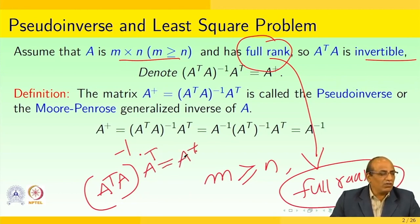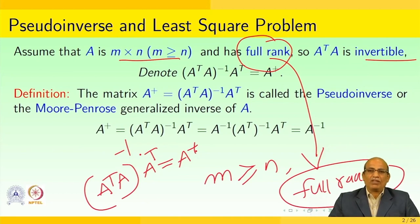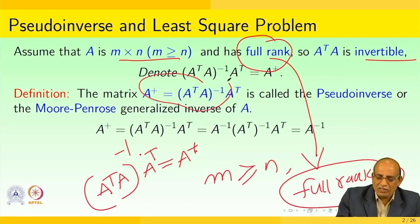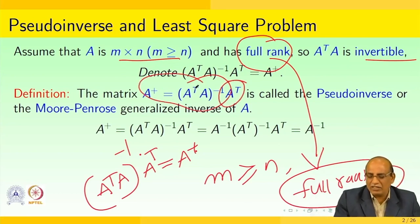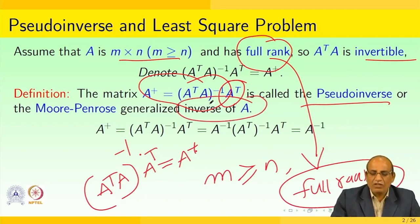We call A plus the pseudo inverse. So A plus is equal to A transpose A whole inverse multiplied with A transpose. This is what we call the pseudo inverse, or the Moore-Penrose generalized inverse of A.